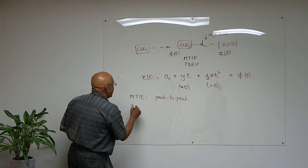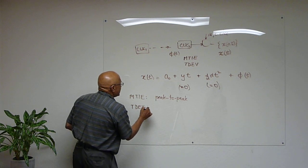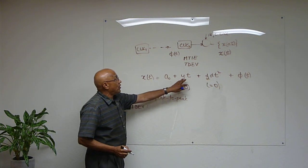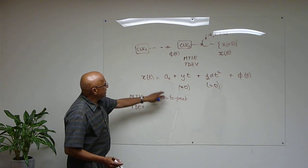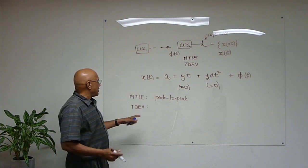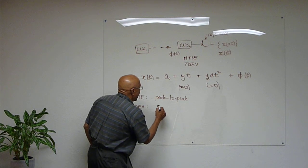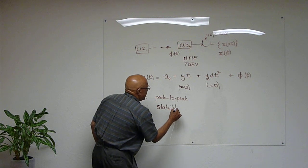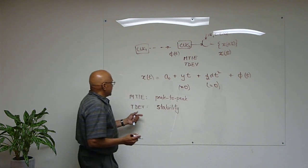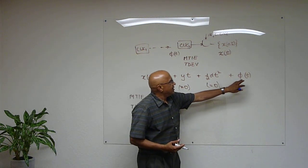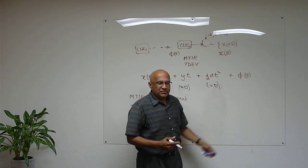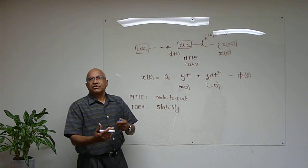The other is TDEV. TDEV doesn't care, actually does not care about the fractional frequency offset, and neither cares about the constant time error. This one looks at the stability. In other words, TDEV, to some extent, looks like the standard deviation of the noise after it has been passed through some kind of filter.